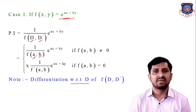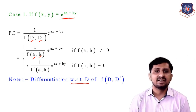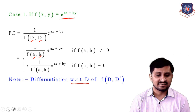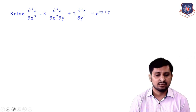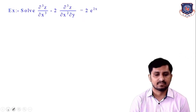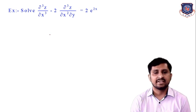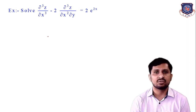That means you differentiate f(D, D') with respect to D, then take a instead of D and b instead of D'. If you remember, in the last lecture we already discussed this. Now let's solve one more example. Second example: Solve ∂³z/∂x³ - 2∂³z/∂x²∂y = 2e^(2x).